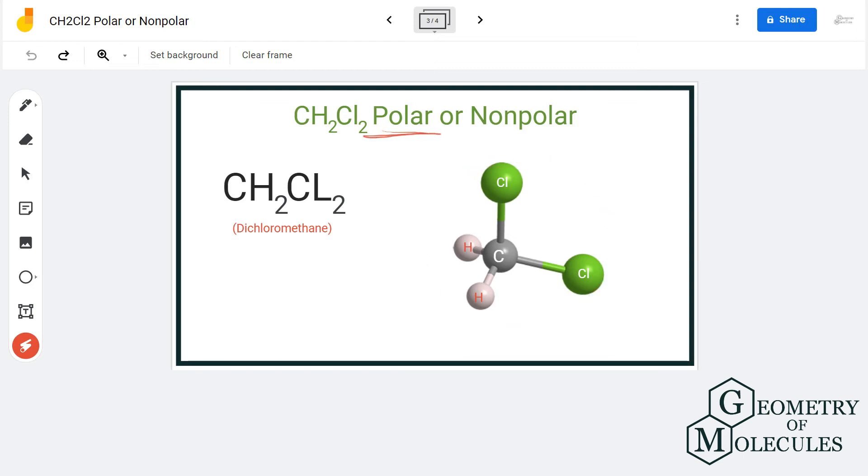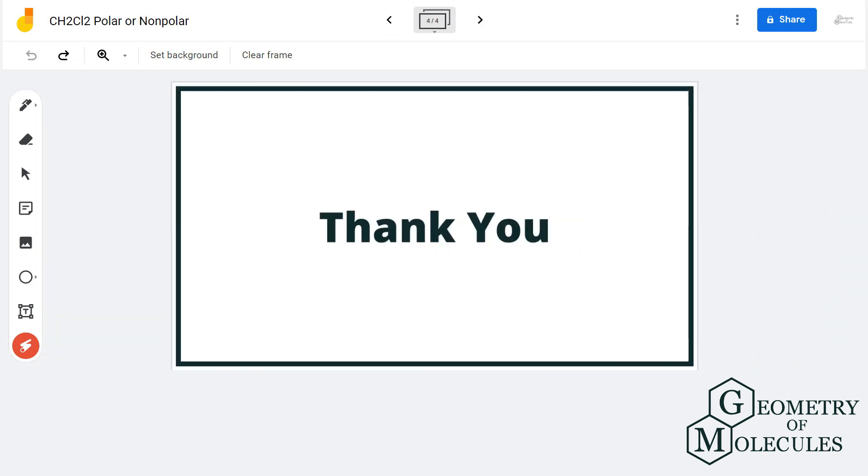So dichloromethane is a polar molecule. For more videos on Lewis structures, molecular geometry, and polarity of molecules, subscribe to our channel. Thank you for watching.